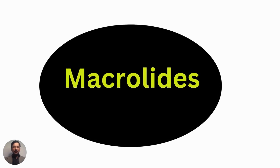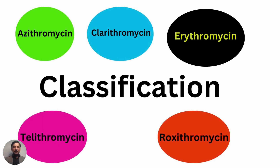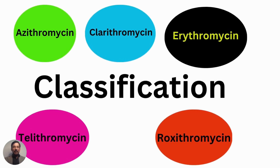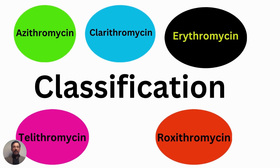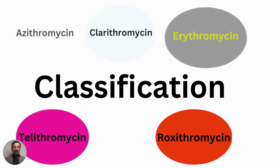Today I am going to talk about another group of antibiotics: macrolides. The classification of macrolides includes azithromycin, clarithromycin, erythromycin, telithromycin, and roxithromycin. These are the drugs present in this class.